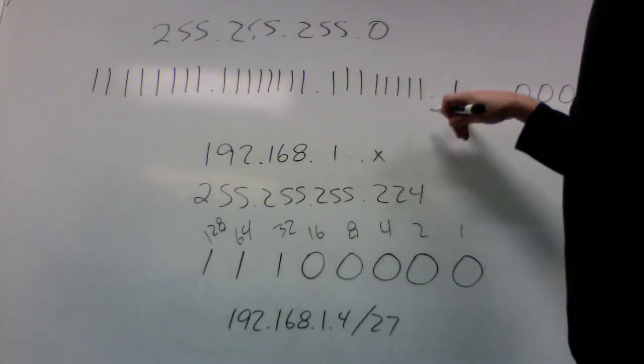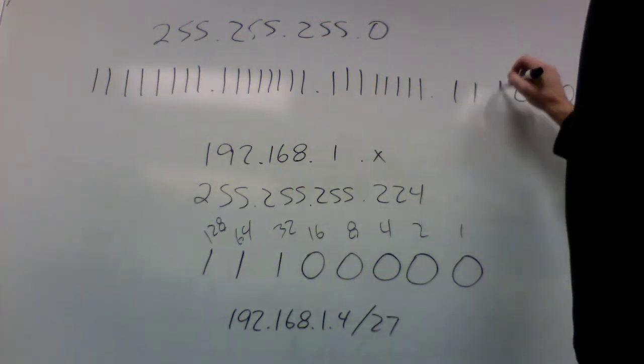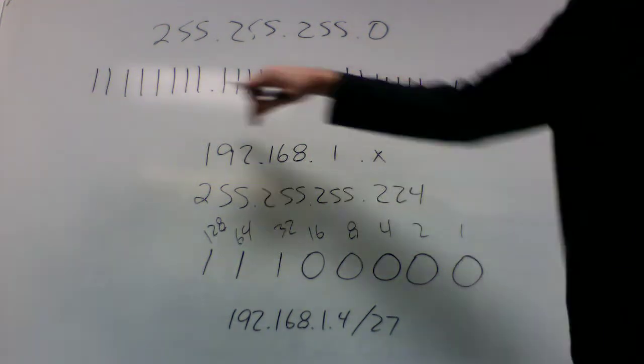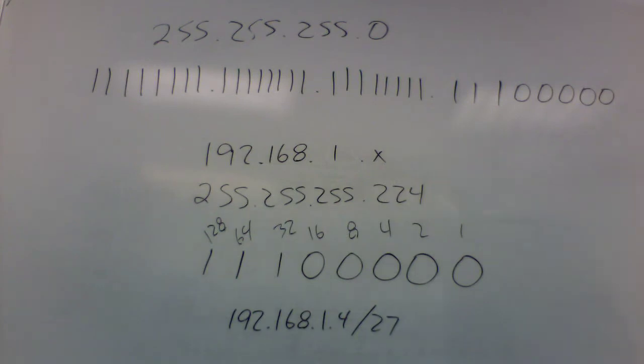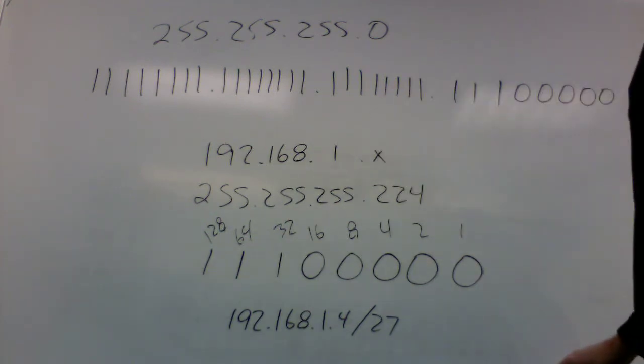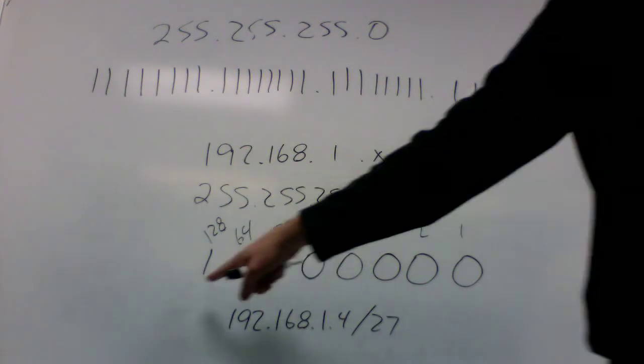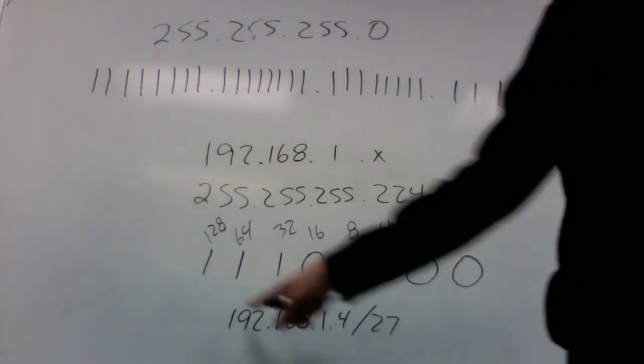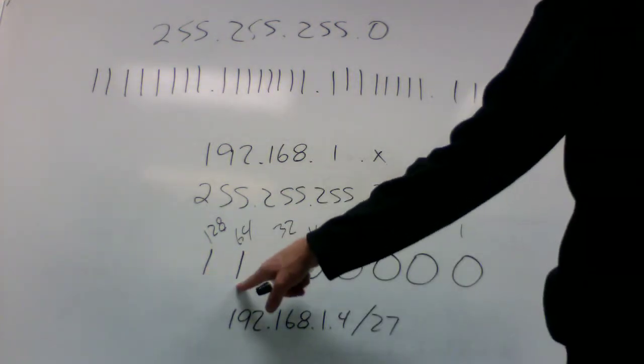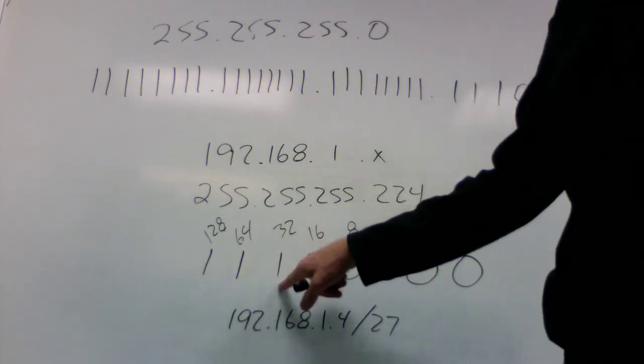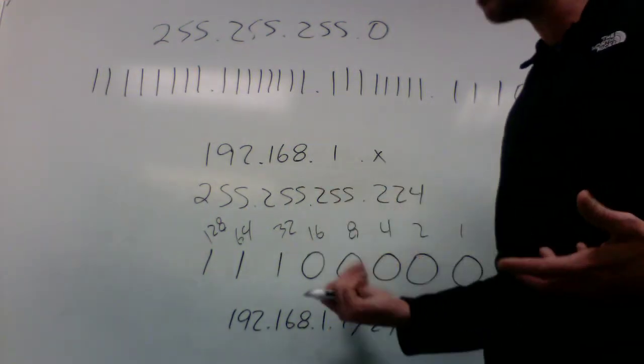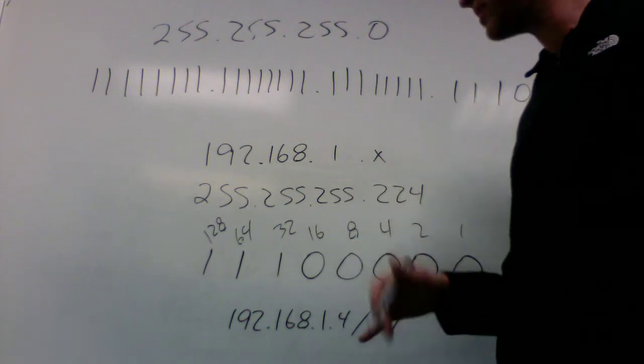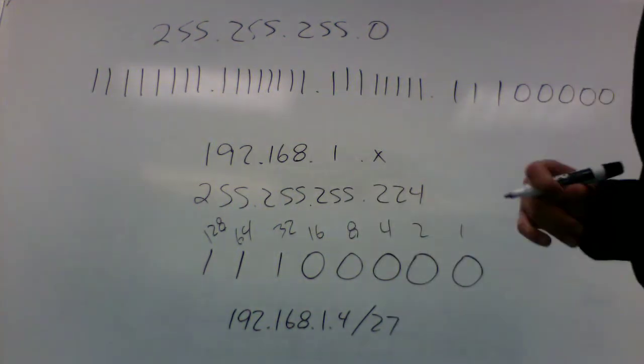So I know that I need three more ones to give me 27 on top of the 24 I already had for the first three octets. So this is essentially what that subnet mask looks like in binary. And of course, if I look at the decimal notation, it's 128 plus 64 is 192, plus 32 gives me 224. And I could write this as 192.168.1.whatever the IP address was for this particular host, and then slash 27 instead of actually writing out the subnet mask.